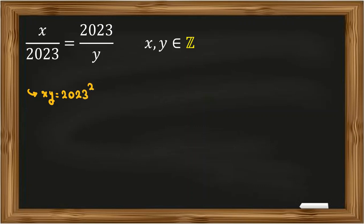2023, if you prime factorize, is a multiple of seven, so it will be 7 times 289, which is 7 times 17 squared. So 2023 squared equals 7 times 17 squared, all squared.